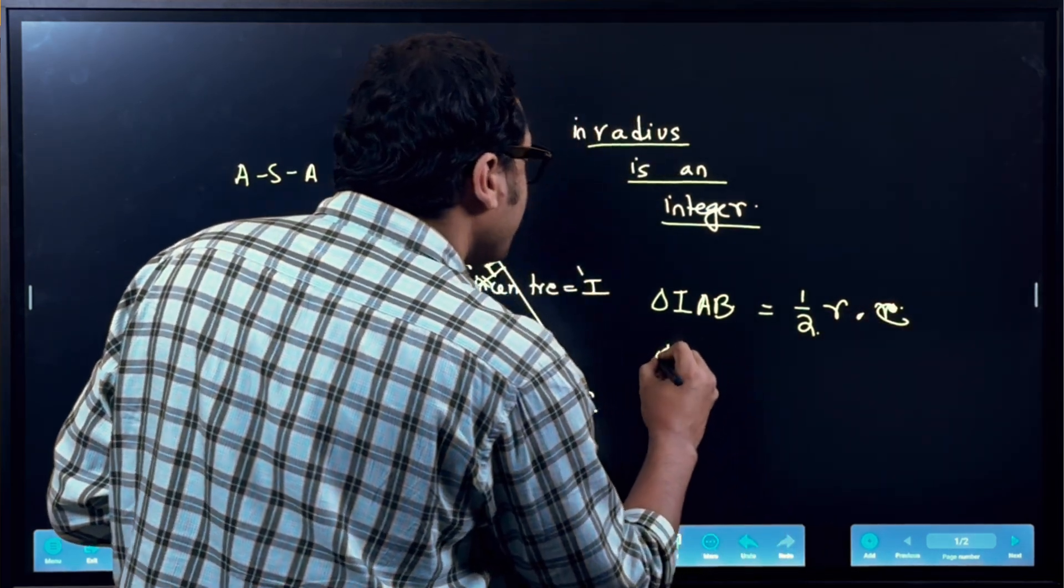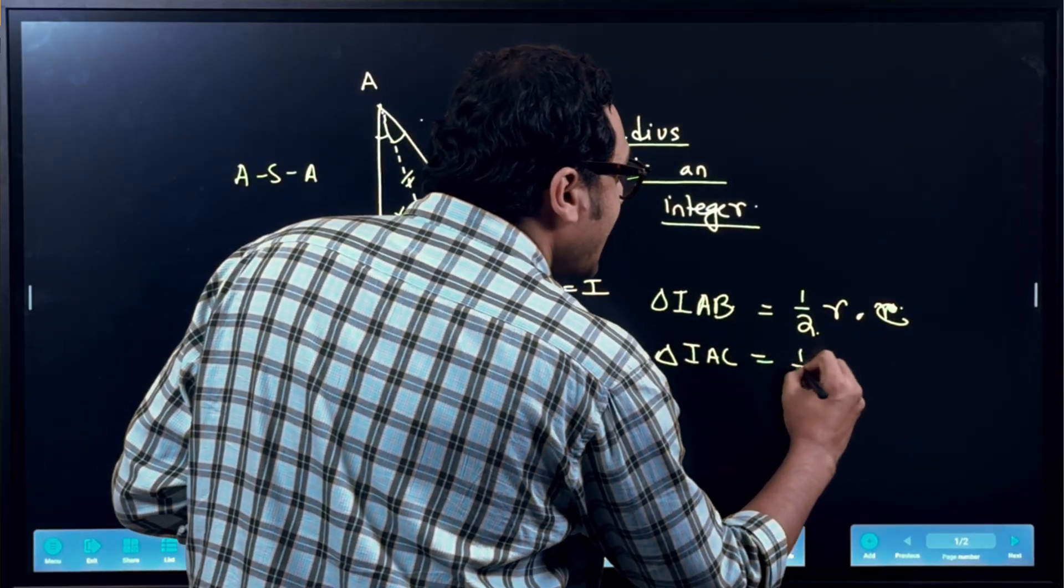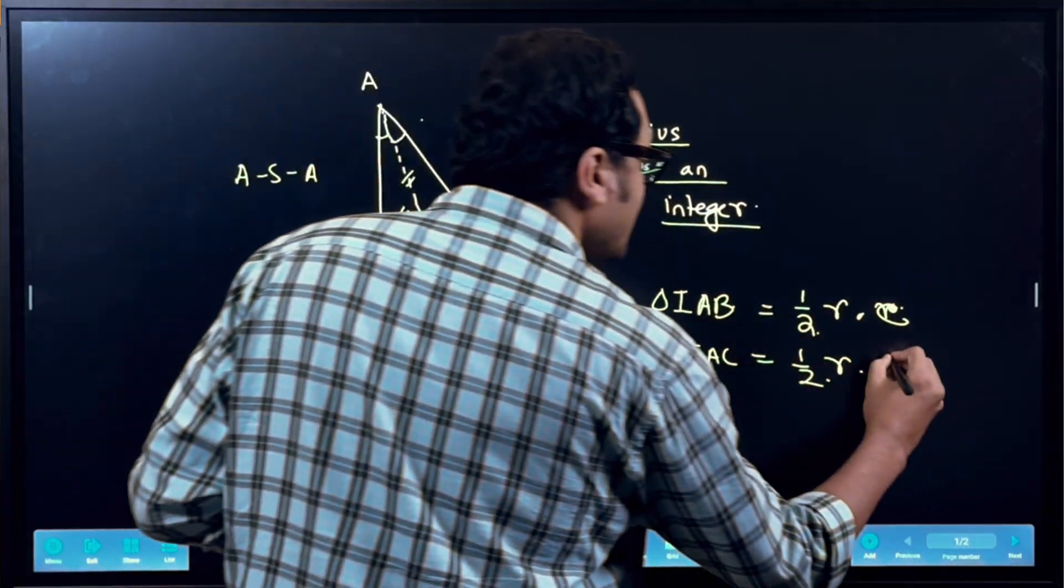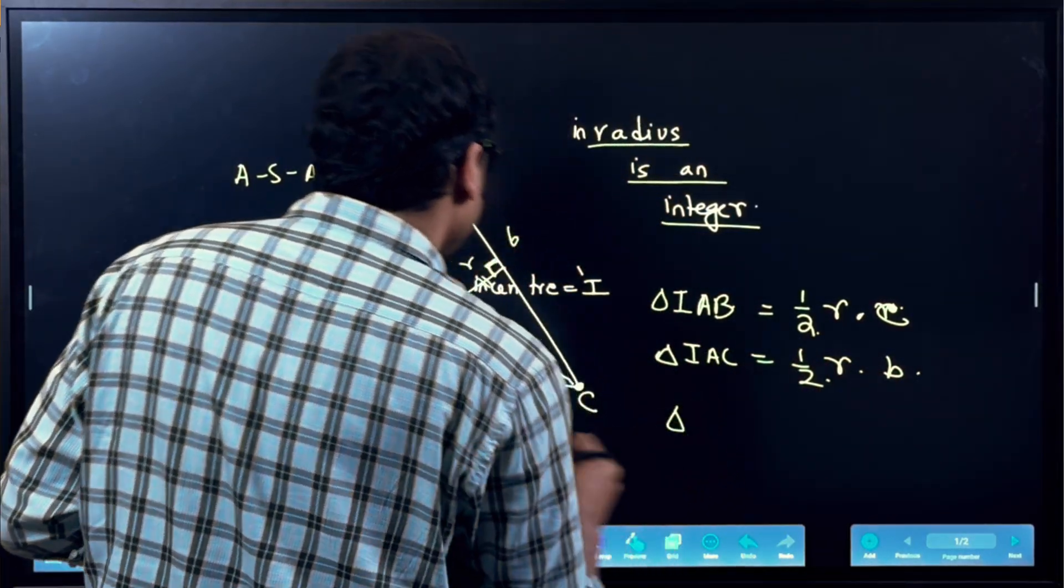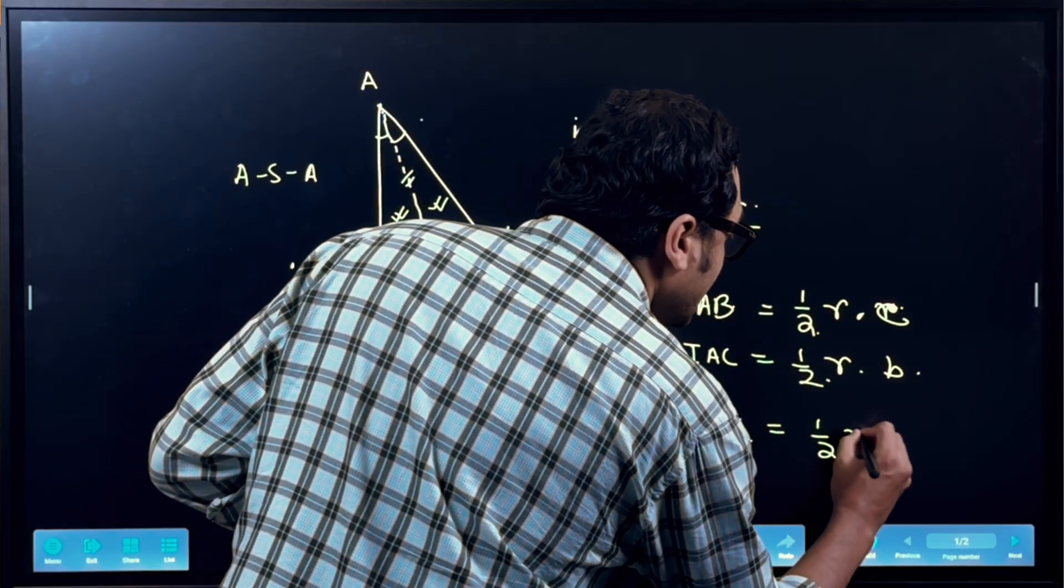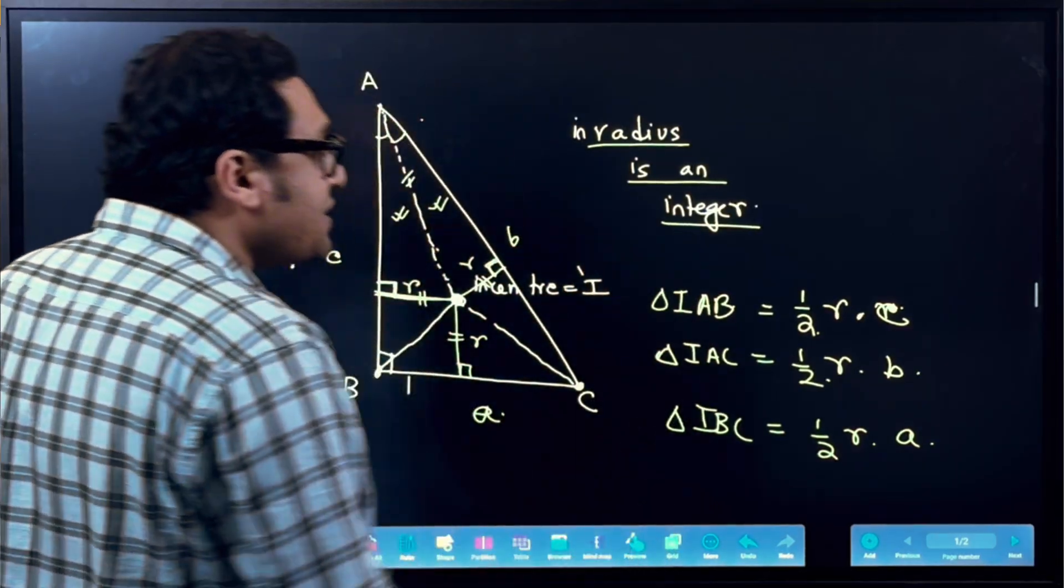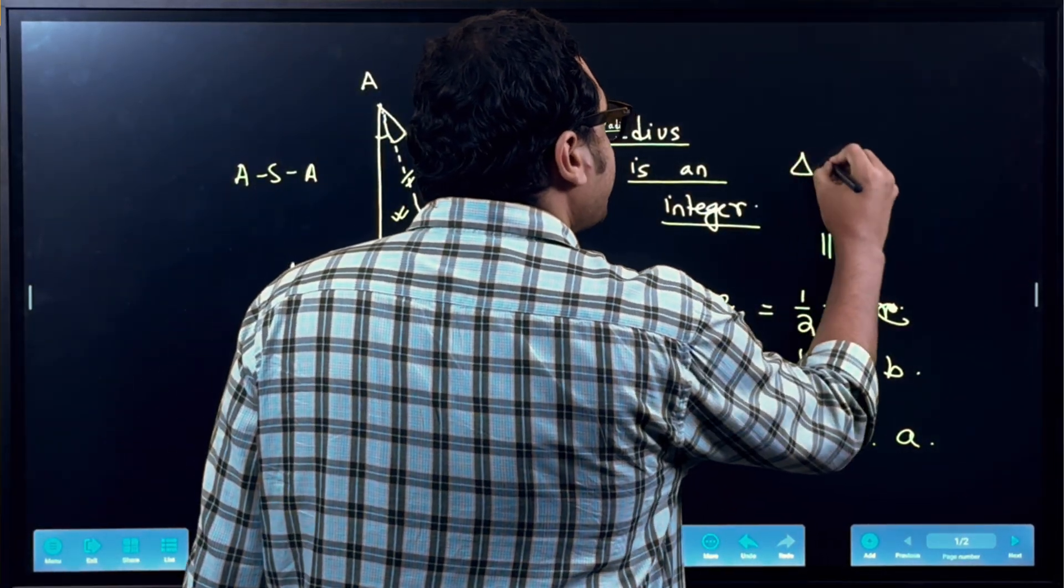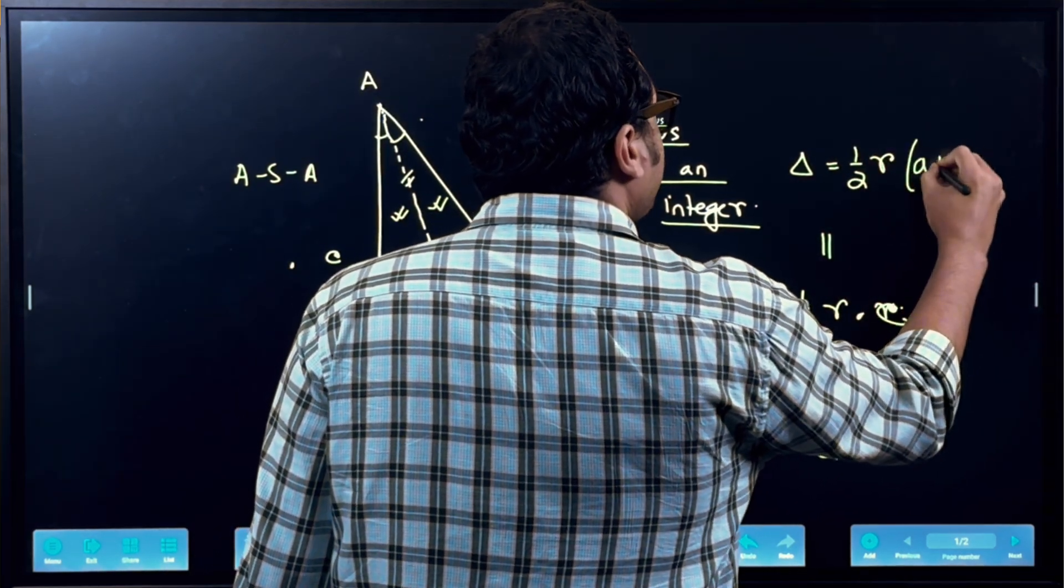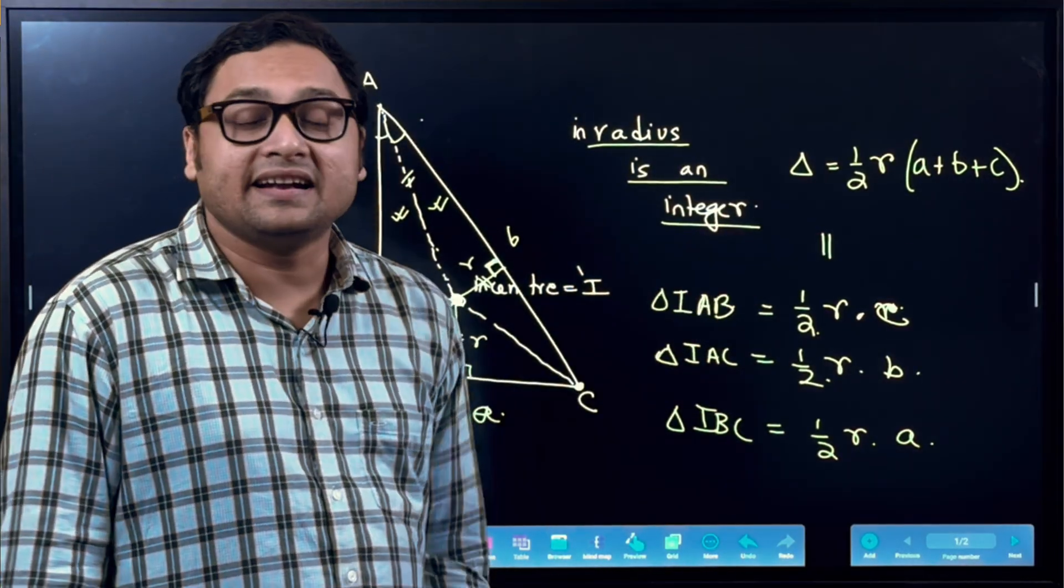Similarly, triangle IAC is half times r times B. And triangle IBC is half times r times A. The side is A. So if I add all the three triangles, I will get the entire triangle is half times r times A plus B plus C. That is the area of the entire triangle.